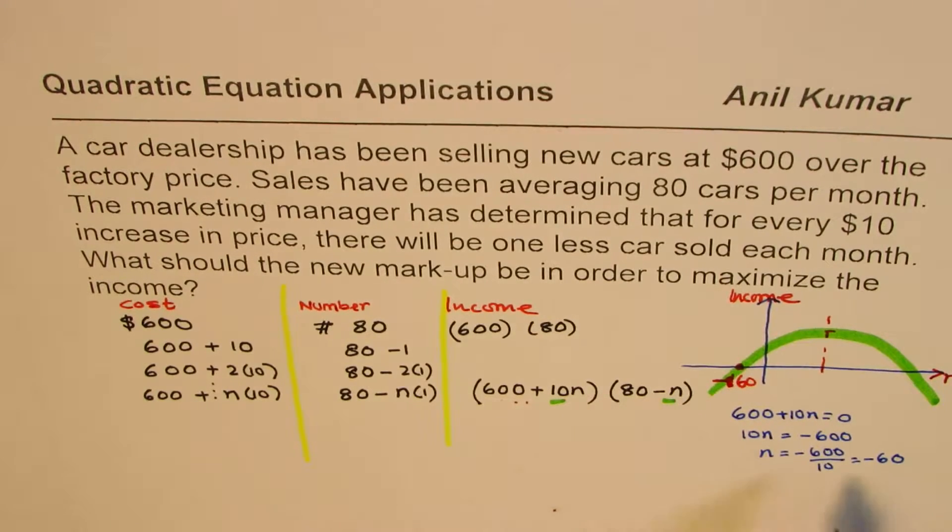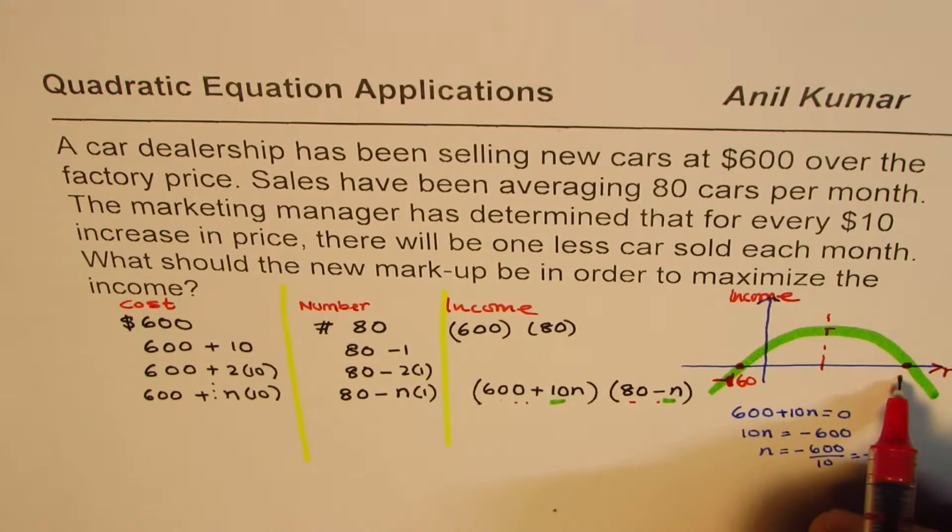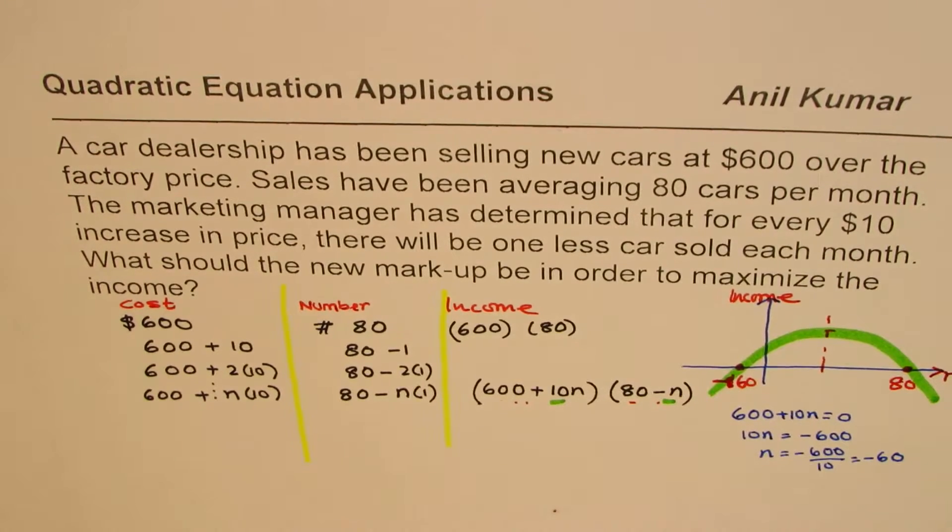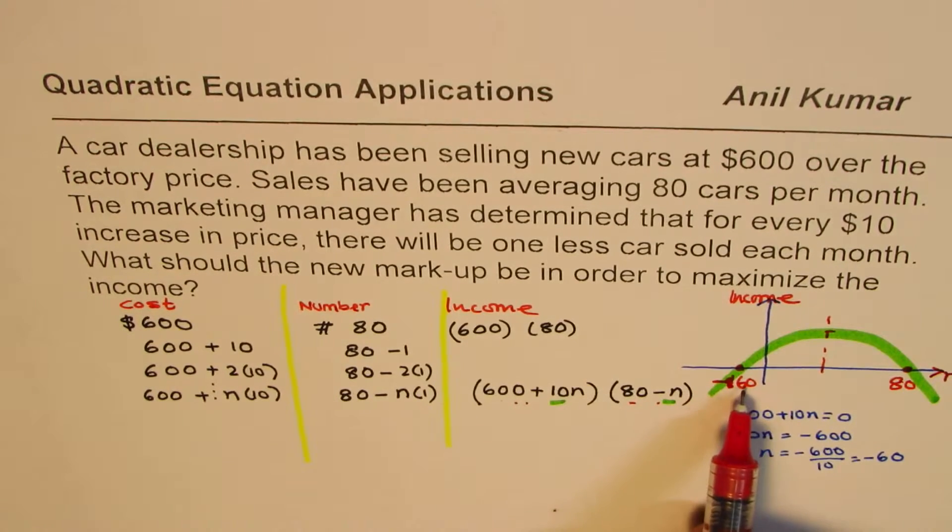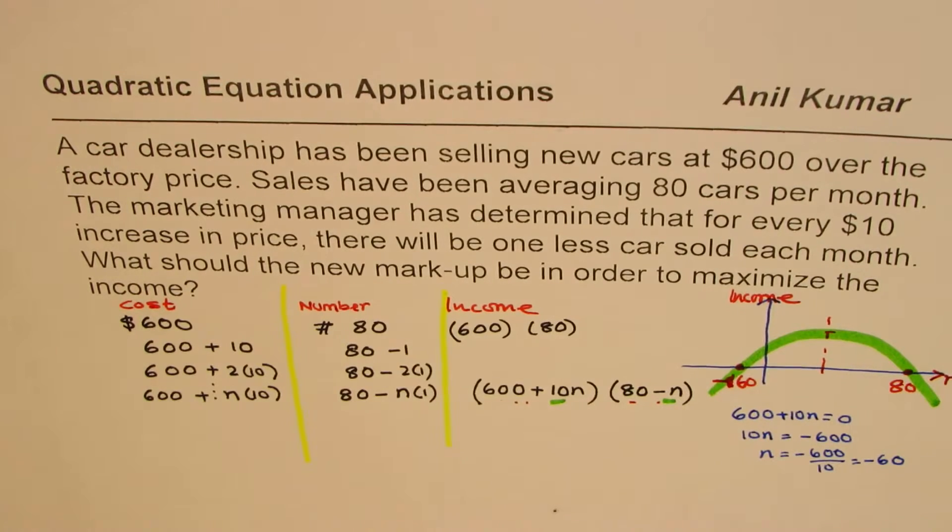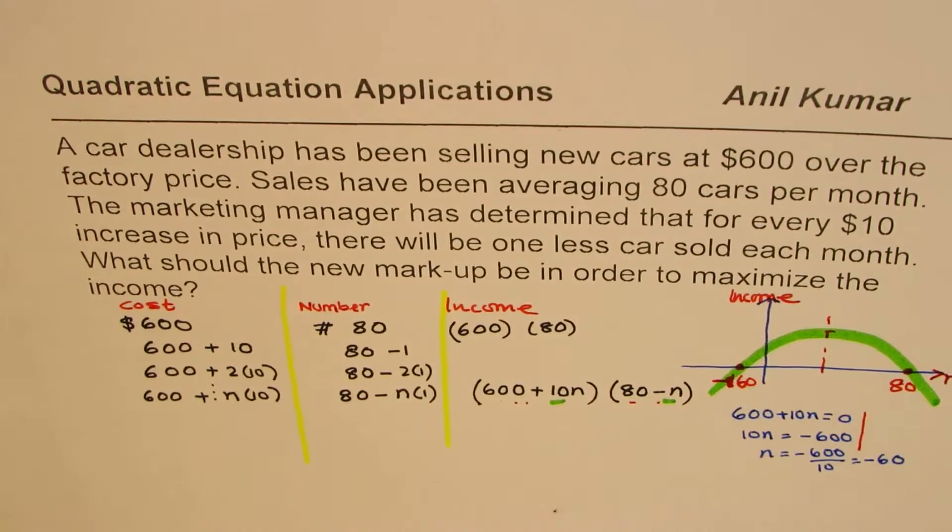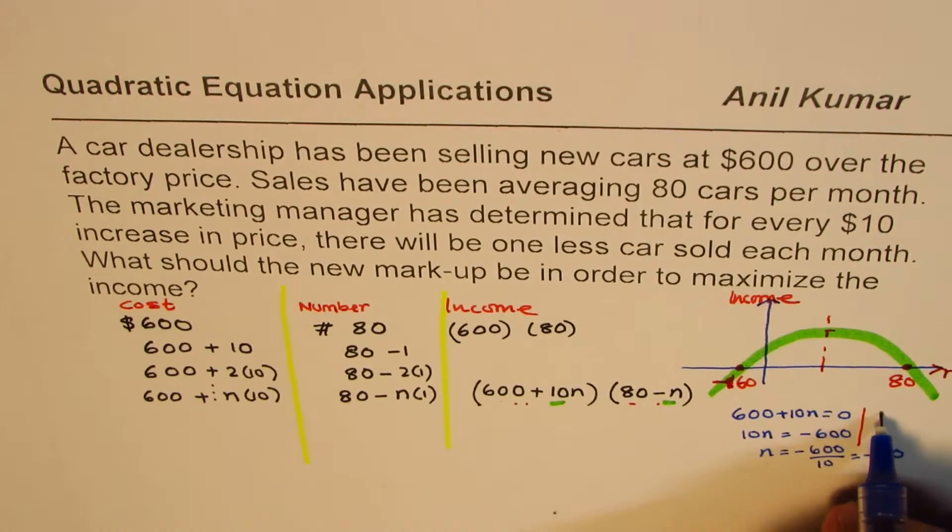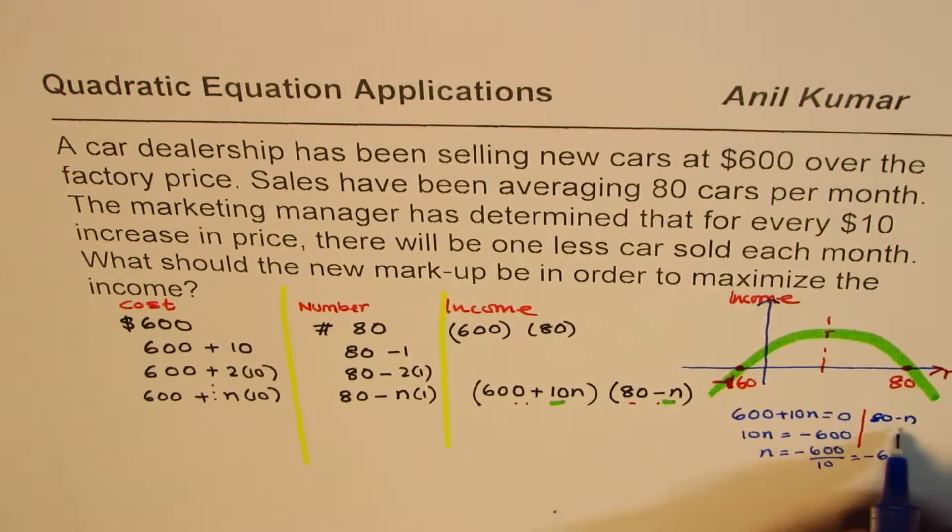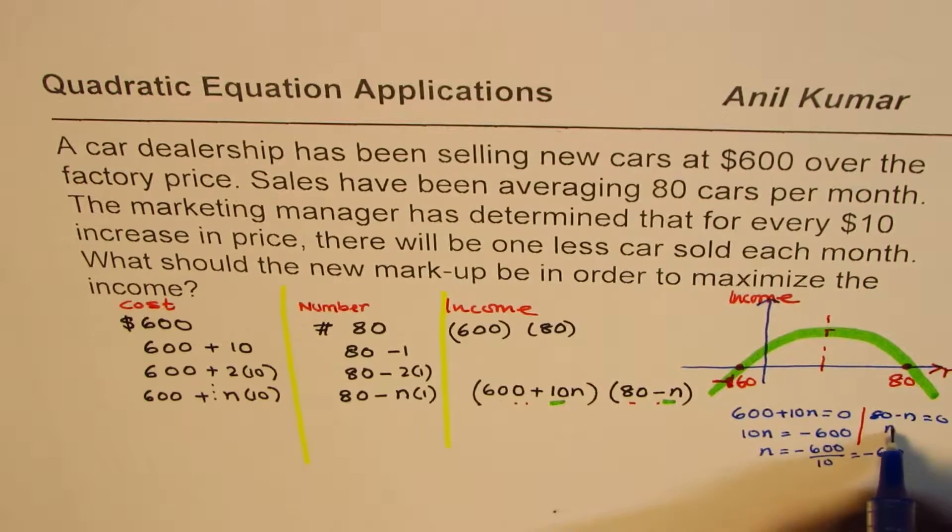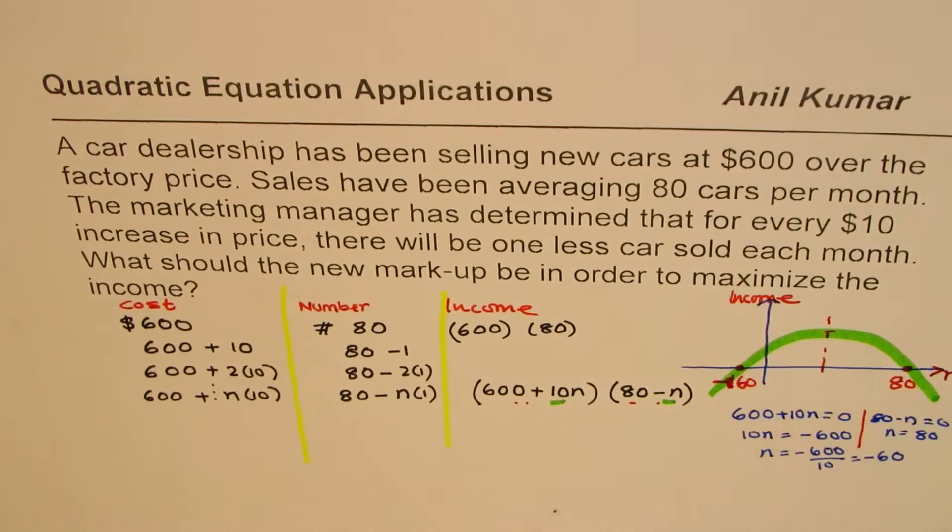How about the other one? The other one is when this is 0. That is, it is equals to 80. So we have one zero for minus 60. The other one is at 80. Other one we get from the second factor, which is 80 minus n. So that is equals to zero for n equals to 80. So these are the two zeros.